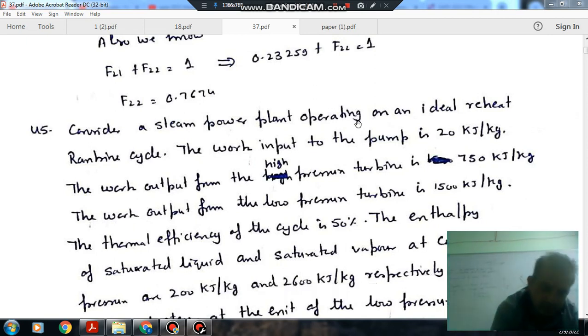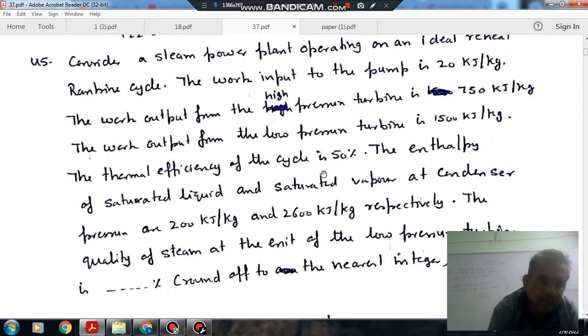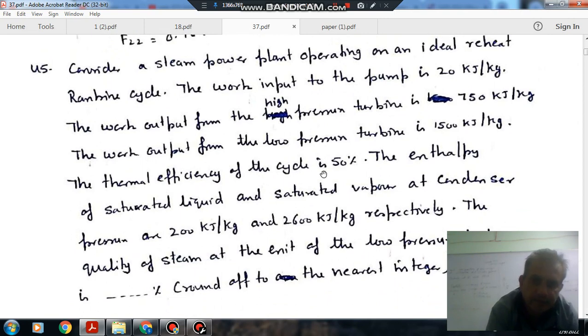Hello, welcome again. We are solving GATE 2021 Mechanical Engineering Paper 1, Question number 45. Consider a steam power plant operating on an ideal reheat Rankine cycle. The work input to the pump is 20 kJ/kg. Work output from the high pressure turbine is 750 kJ/kg. Work output from the low pressure turbine is 1500 kJ/kg.